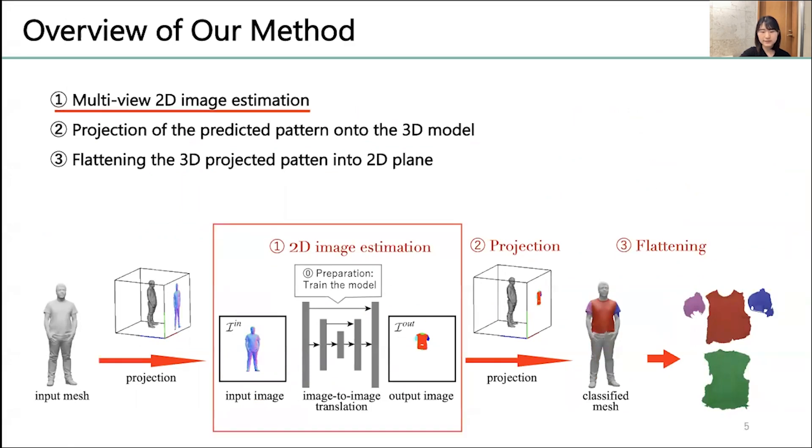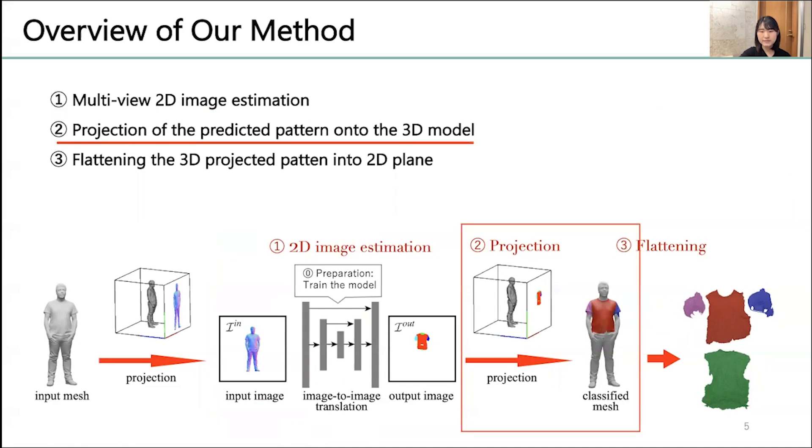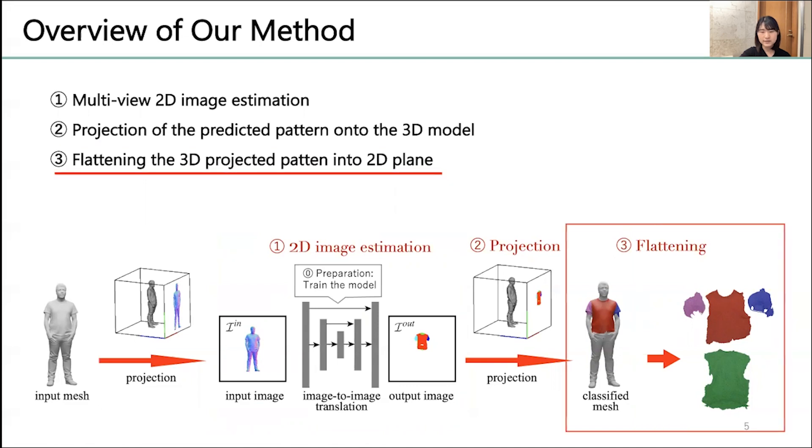First, we estimate multi-view garment pattern label images from 2D normal images. Second, we project the estimated pattern images onto the 3D model. Finally, we flatten the 3D pattern into 2D plane.